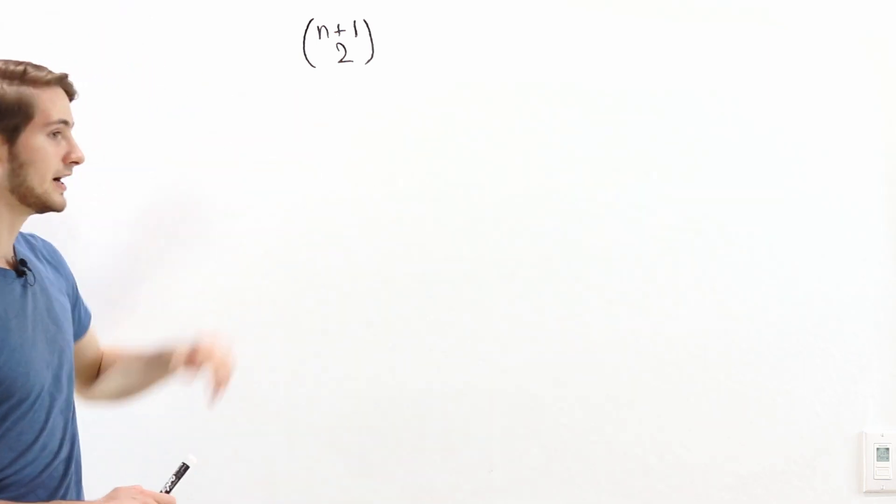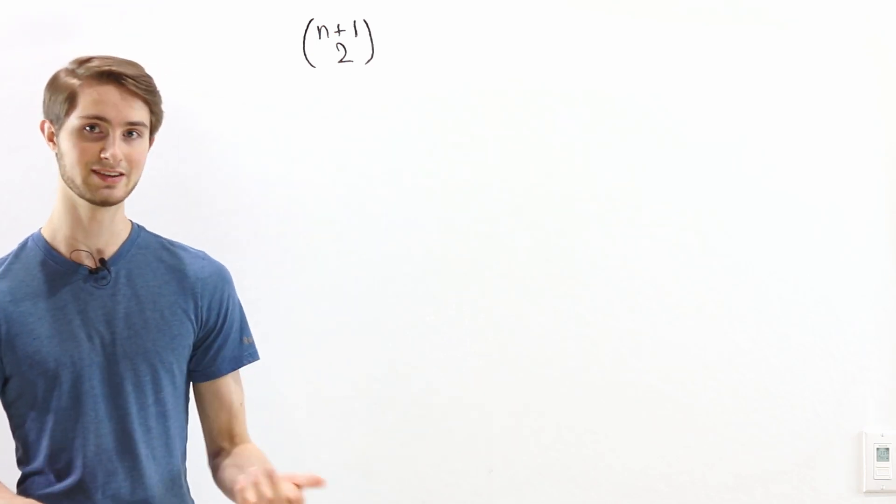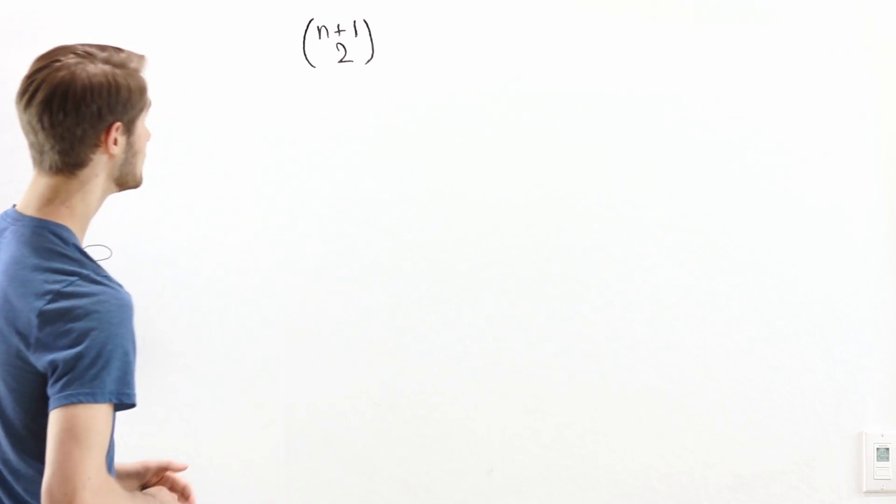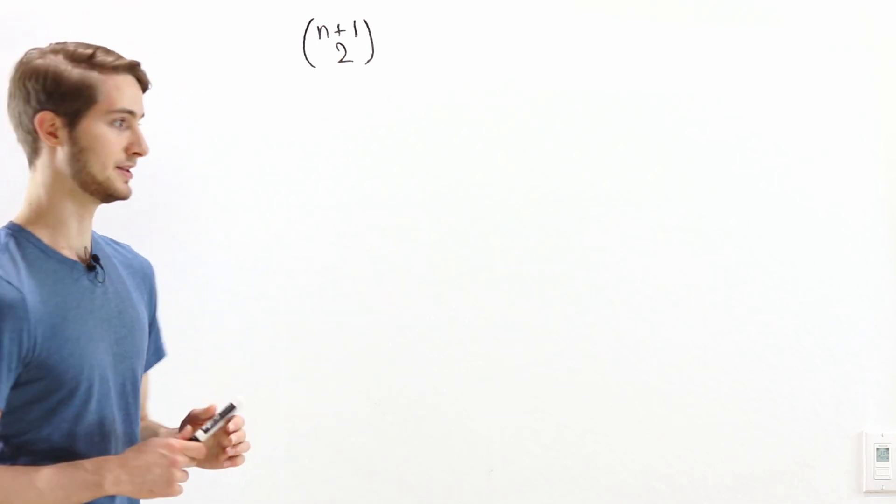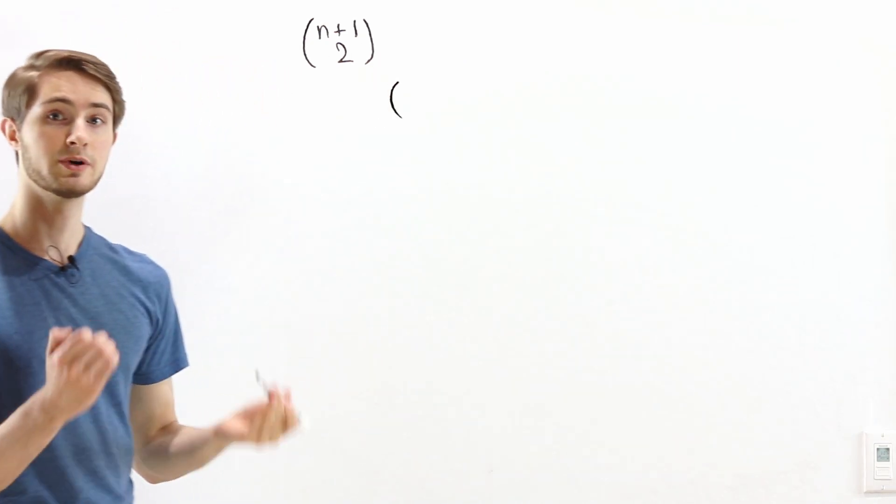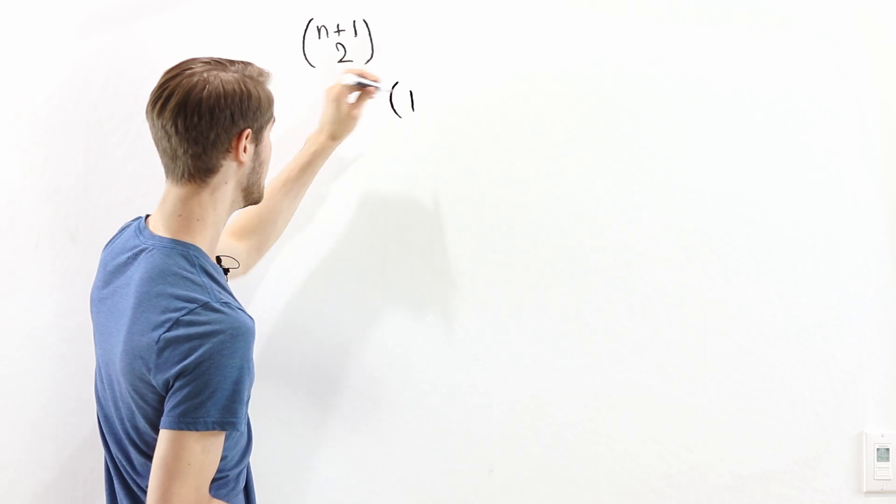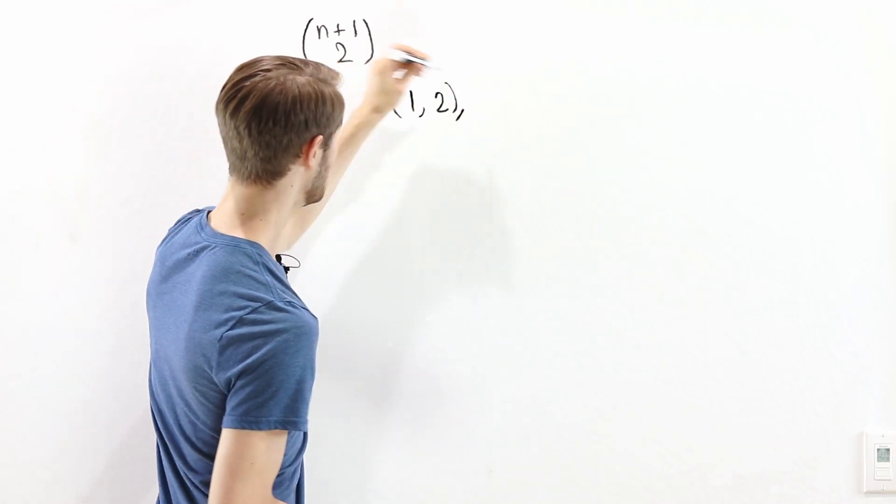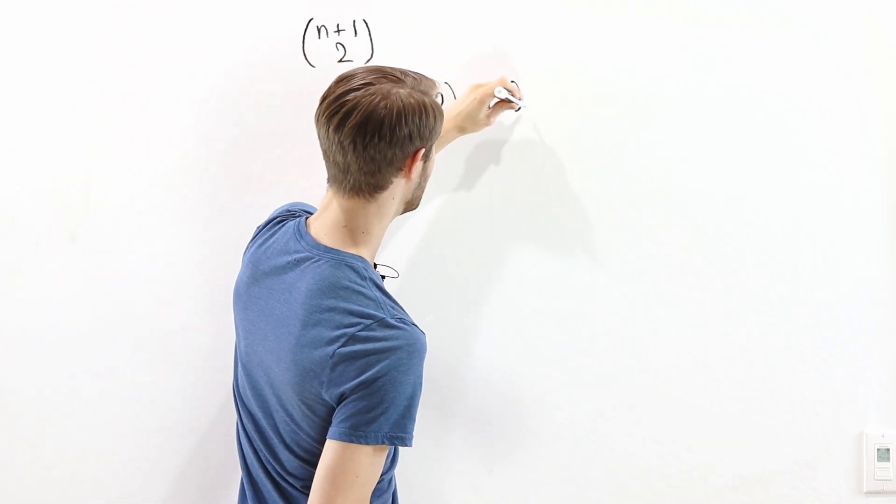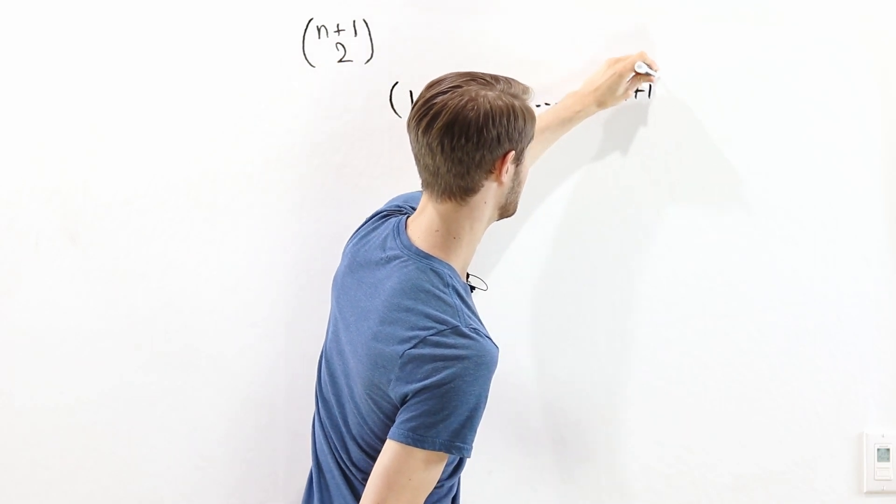To find this value, let's just list all of the possible pairs of integers and count how many we get. Let's start out with all of the pairs that have a 1 in them. We know that 1,1 doesn't count because we want to choose two distinct integers. So the first pair that starts with 1 is 1,2. We could also have 1,3 or 1,4 all the way up to 1, n plus 1.